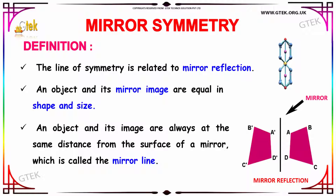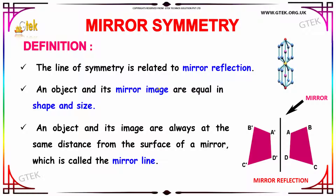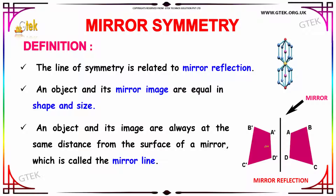So what is meant by Mirror Symmetry? Mirror Symmetry is a line of symmetry which is related to mirror reflection. The two components are mirror symmetry of each other as the right becomes the left and the left becomes the right of the image. An object which is a mirror image will be equal in shape and size. The object and the image are always at some distance from the surface of the mirror, and this is known as your mirror line.